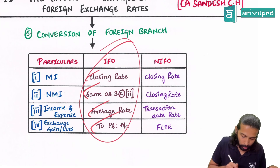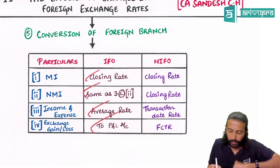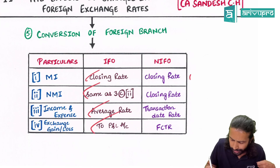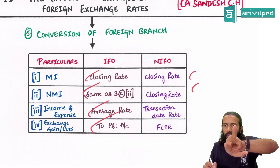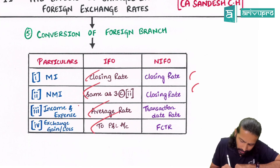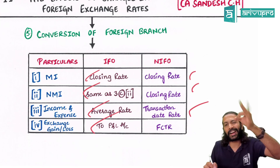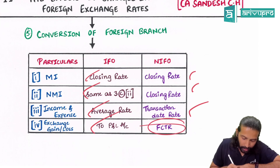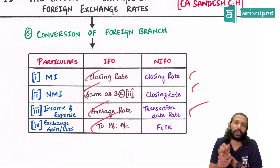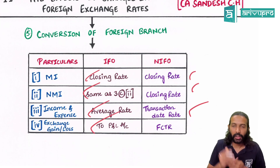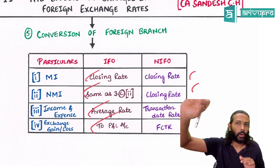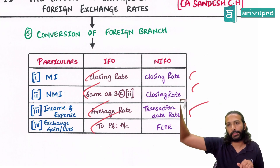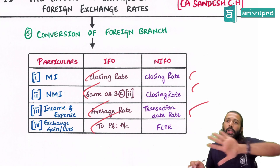We will study more about this in branch accounting. For Non-Integral Foreign Operations (NIFO), whether monetary or non-monetary, everything is converted using the closing rate. For income and expenses, the suggested rate is the transaction date rate. The exchange gain or loss does not go to P&L but is accumulated in FCTR. It stays in FCTR as long as you hold the investment. Once you sell off the non-integral foreign operation, the amount moves from FCTR to P&L.